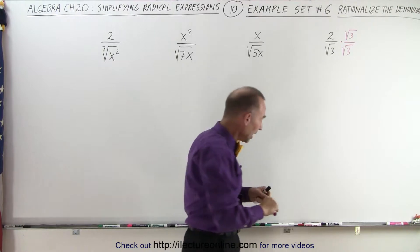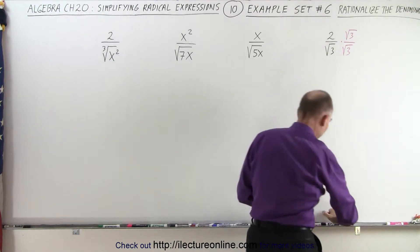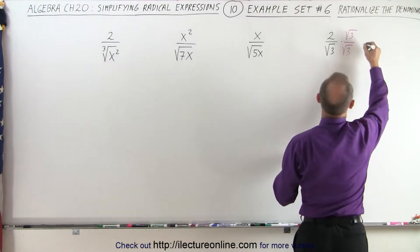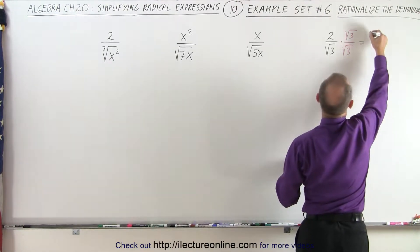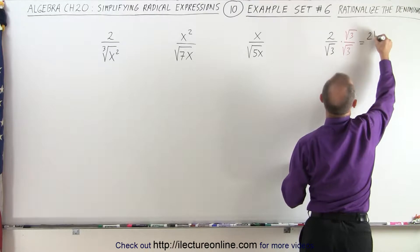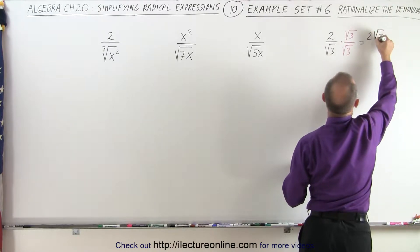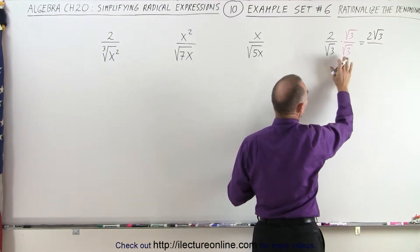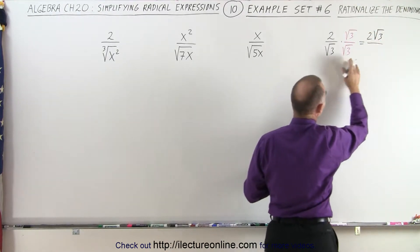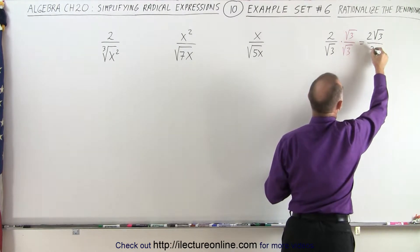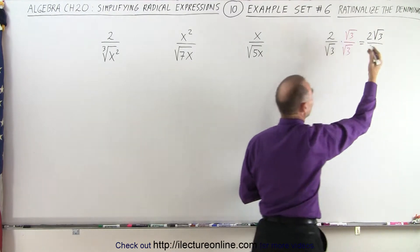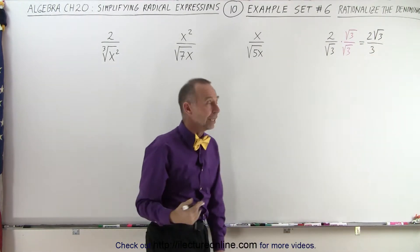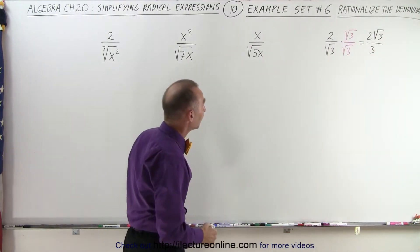When we do that, we get the following. In the numerator we get 2 times the square root of 3, and in the denominator, the square root of 3 times the square root of 3 is simply equal to 3. And so that's how we get rid of that radical in the denominator.